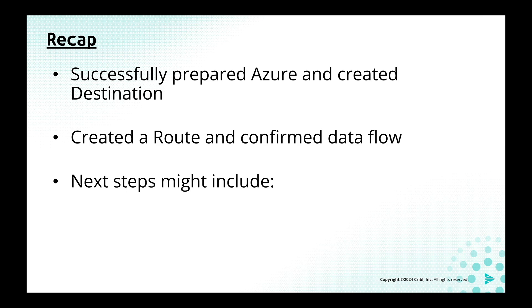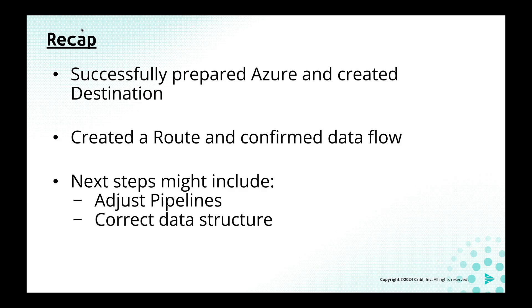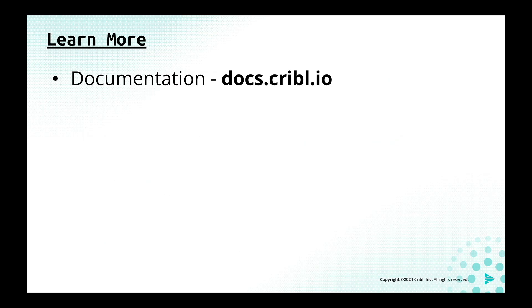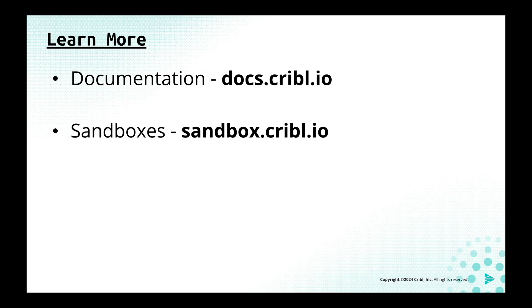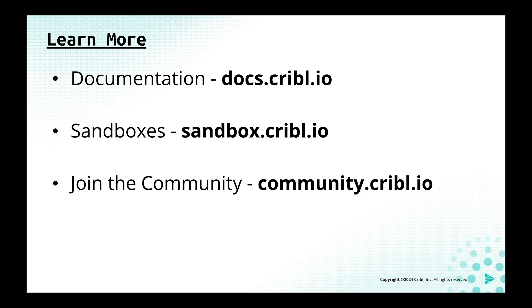And that's it for this exercise. In just a few minutes, we've set up our Sentinel destination, created a route to get our source data there, and validated that data is being received. Our next steps might be to adjust the pipeline to do any event shaping, such as enrichment or field optimization, or correct any issues in the data structure. We might also need to do some tuning with the destination settings if we encounter any issues. If you want to know more, check out our documentation at docs.cribble.io, try out our free sandboxes at sandbox.cribble.io, and join us at community.cribble.io to be part of the goat herd.